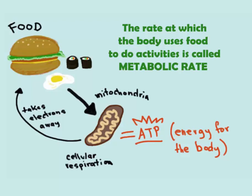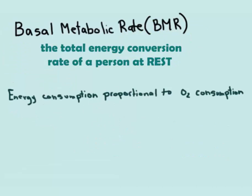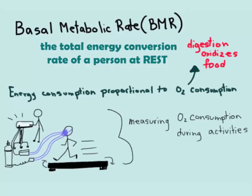The rate at which the body uses food is called the metabolic rate. We also have the basal metabolic rate, which is the amount of energy per unit time that the body needs while at rest. Energy consumption is also proportional to oxygen consumption. We can measure this using an apparatus that measures oxygen consumption during activity, as pictured here. We can measure energy consumption this way because the process of digestion oxidizes food, meaning it takes electrons away.